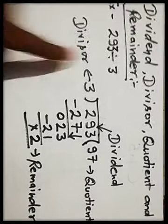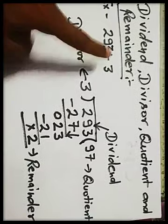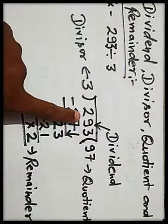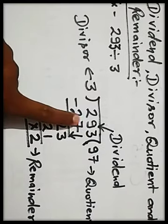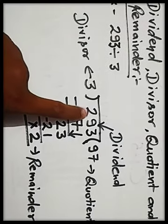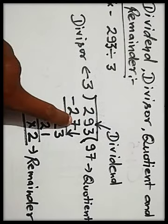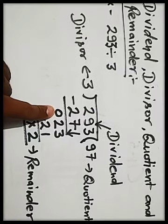See the example, 293 divided by 3. Divide this number 293 by 3. 3 nines are 27. Now subtract this 27 from 29. 9 minus 7 is 2 and 2 minus 2 is 0. You can use here cross also.